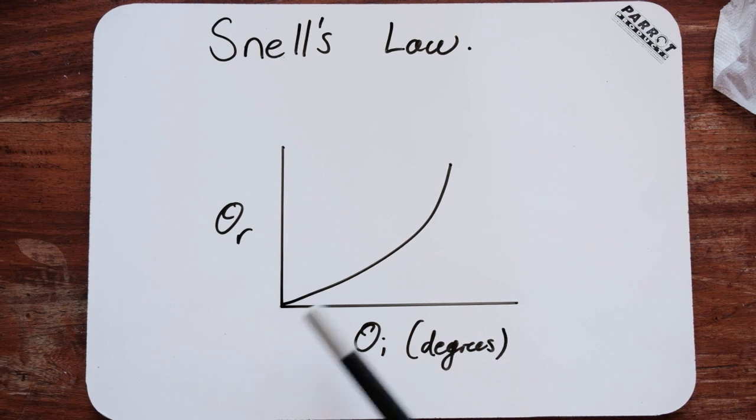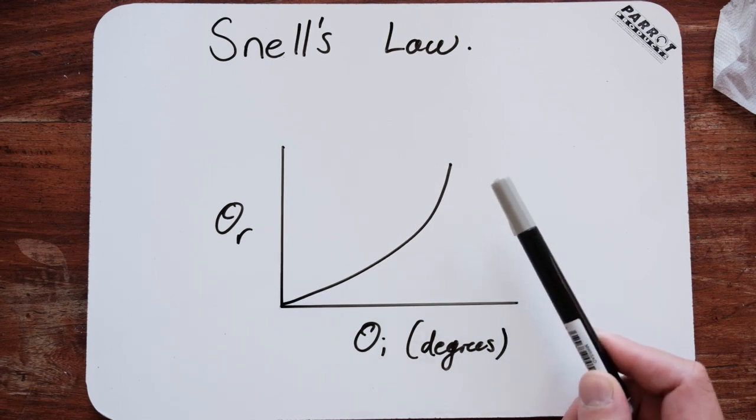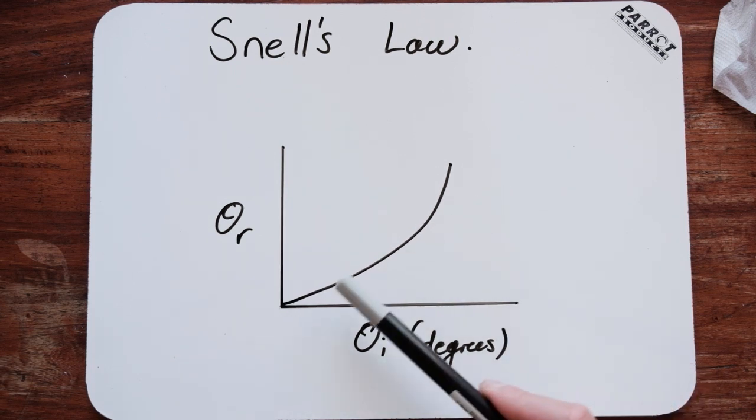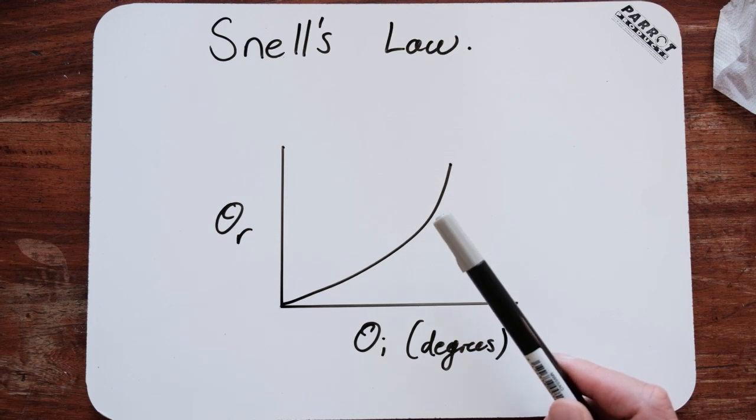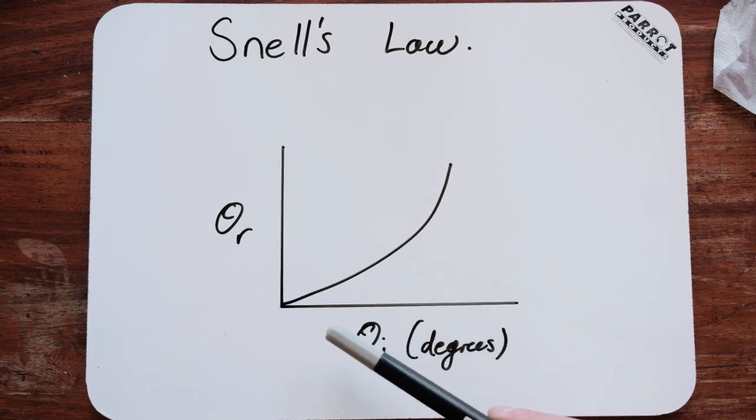So with that exponential curve, obviously we can't really predict very easily from curves. Now, in order for Snell to actually find a prediction, we do what every other mathematician in the world likes to do. We try to create a line graph out of it.